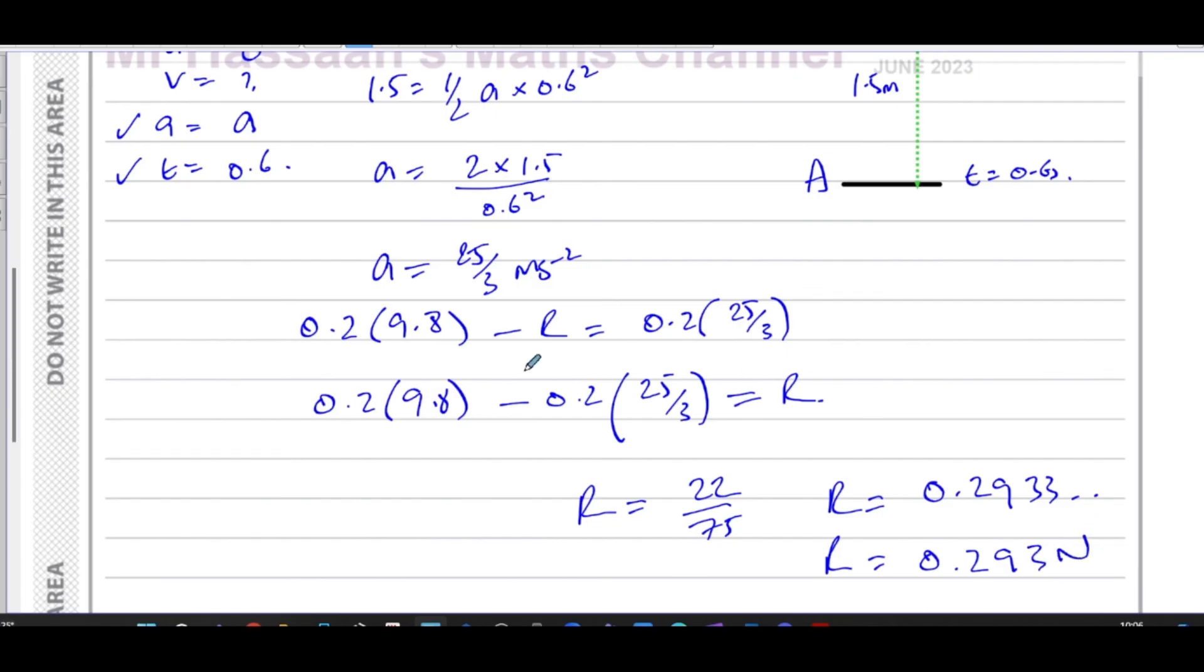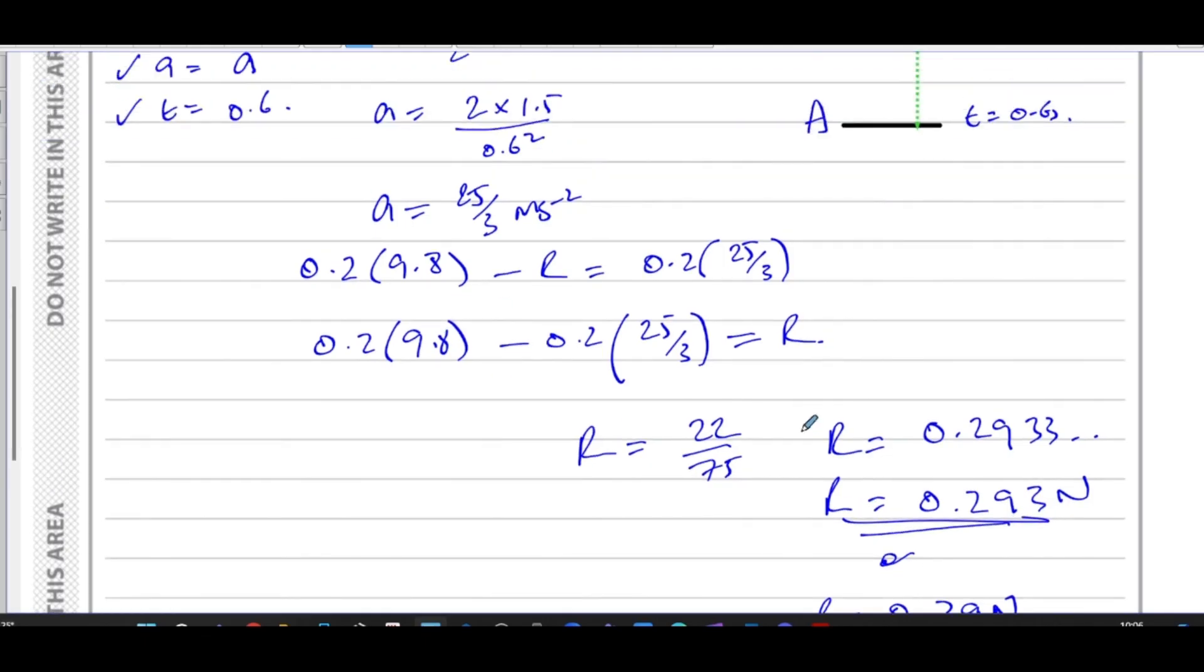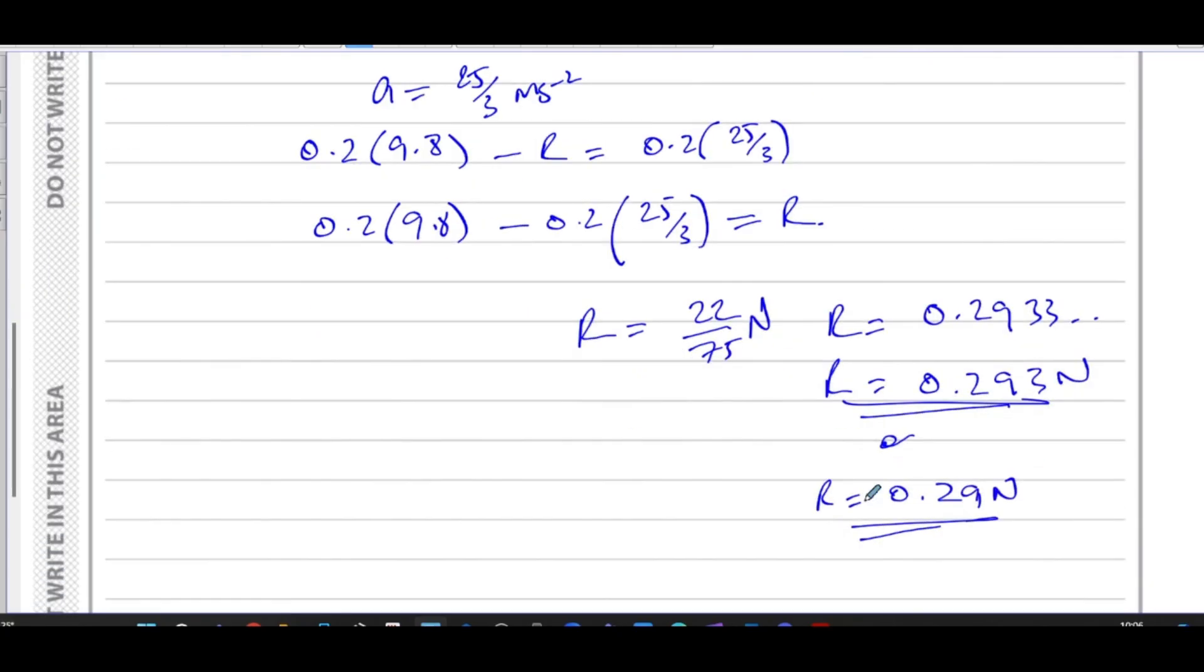And as we used G in the question, we could also say R equals 0.29 newtons. Both of those will be acceptable answers for this question. And I guess even this would be acceptable. I think you could put all of these three versions of the answer and it will be fine.